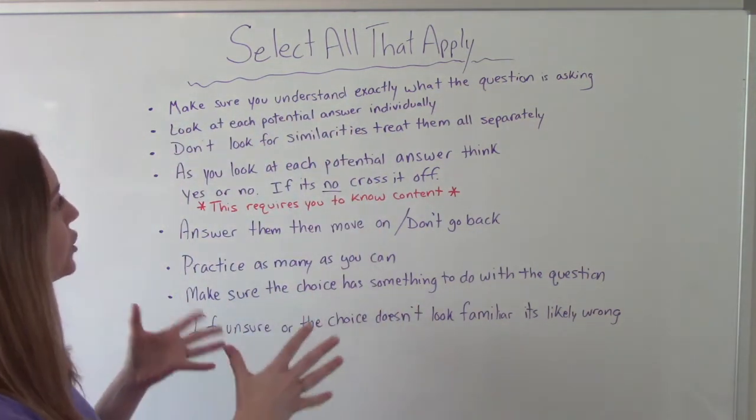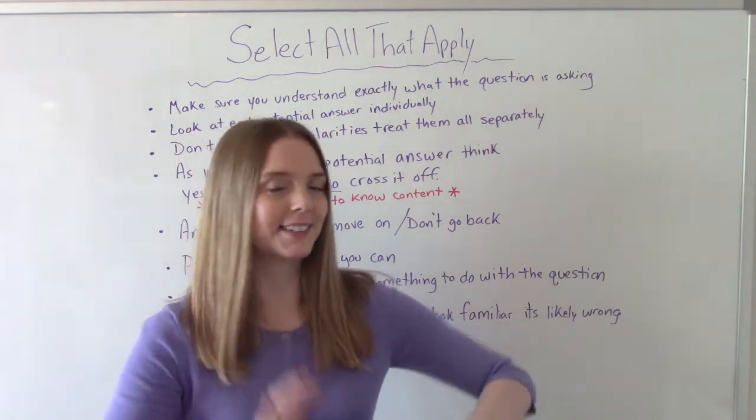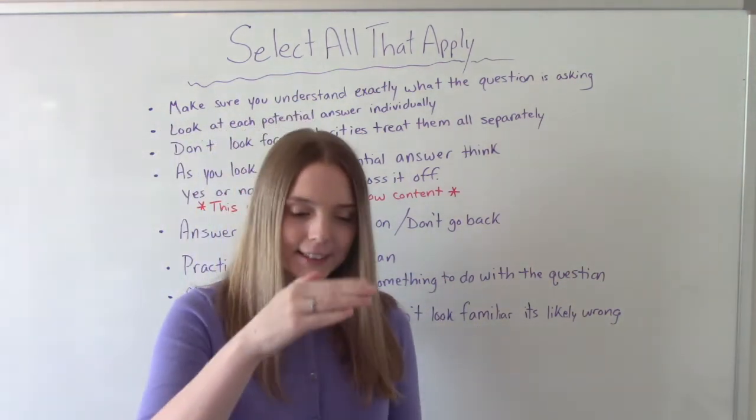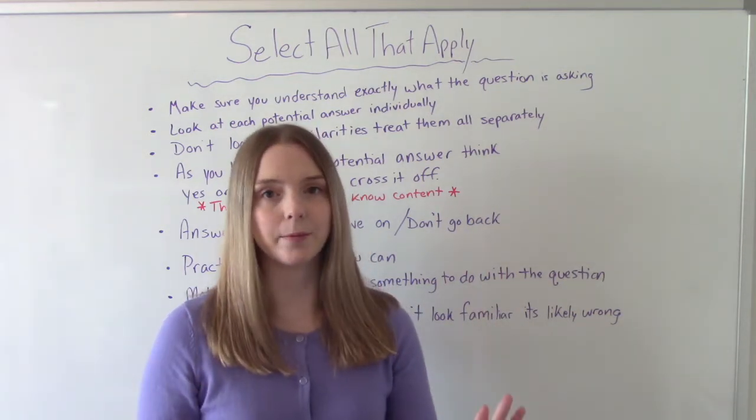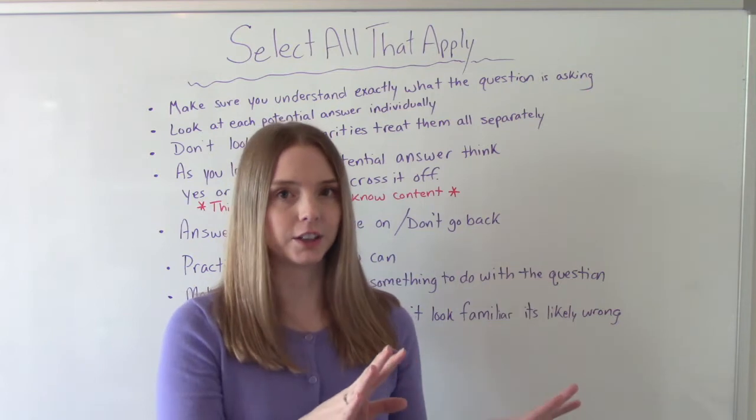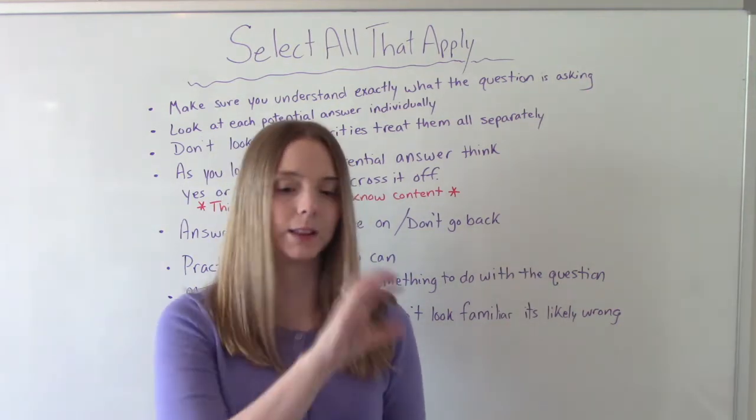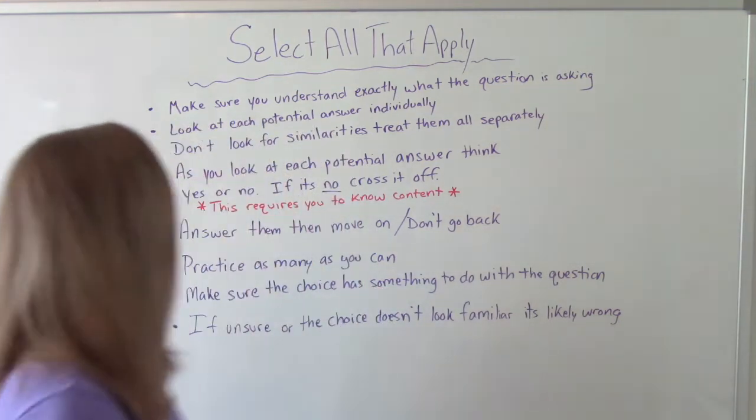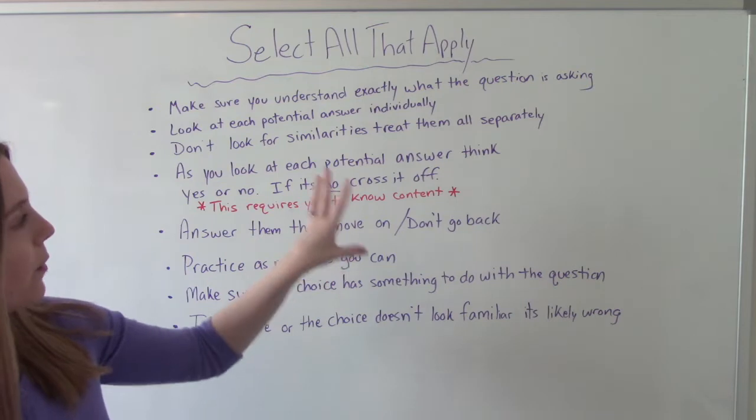You want to look at each potential answer individually. So try to resist the temptation to go A, B, C, D, E and read them all the way down. Read them one at a time, and then apply that one to the question. Then move on to B. So don't read them all at once. Read them all separately.